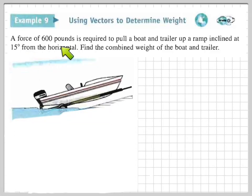A force of 600 pounds is required to pull a boat and trailer up the ramp, inclined at 15 degrees from the horizontal. Find the combined weight of the boat and the trailer.